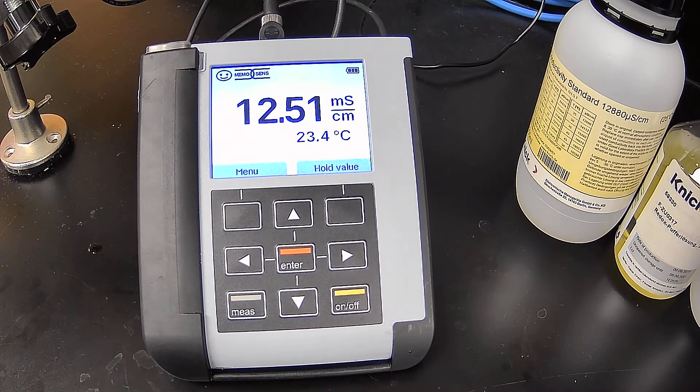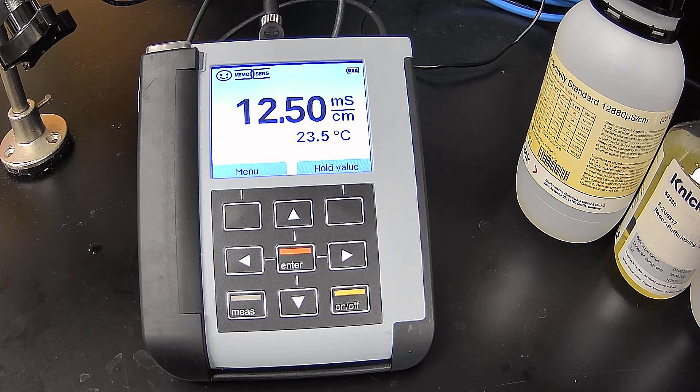Now, to calibrate a conductivity probe, it's pretty straightforward. Conductivity probes are basically fixed slope devices, if you will. Actually, what you're looking at is a cell constant, to be more specific. So what we're going to do is use the calibration solution to adjust the cell constant of this electrode.